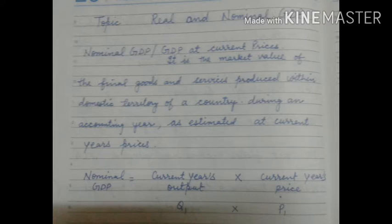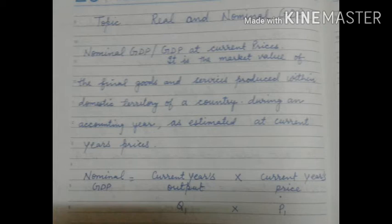as estimated at current year's price. Nominal GDP means the market value of final goods and services. All final goods and services produced in a country's economy, within its domestic territory — that is, within political boundaries — in one accounting year, estimated at the current year's (present) price.